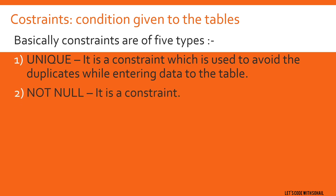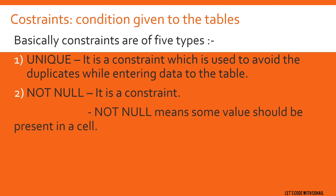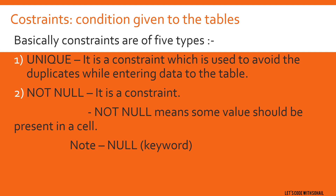Next is Not Null. Not Null means some value should be present in a cell — the column cannot be left empty. Not Null is a constraint that says the column cannot have a null value.